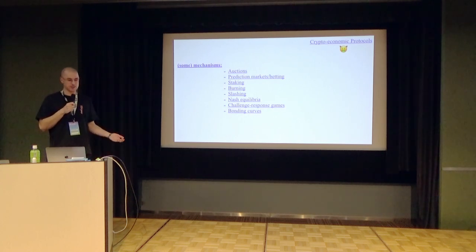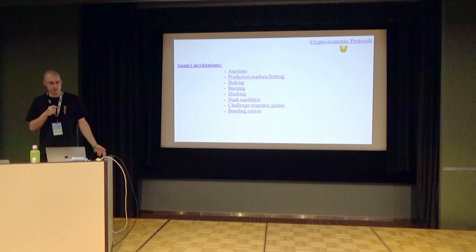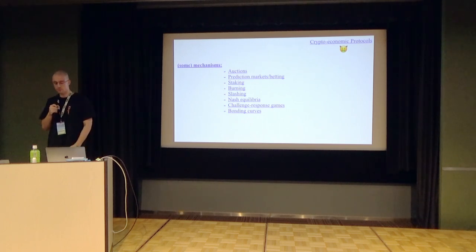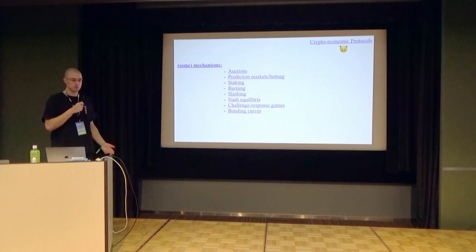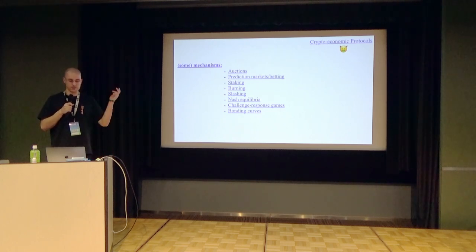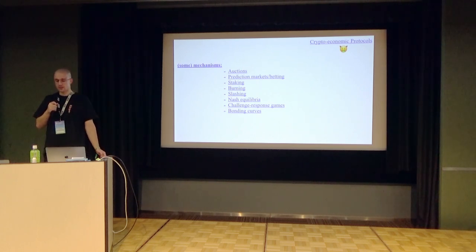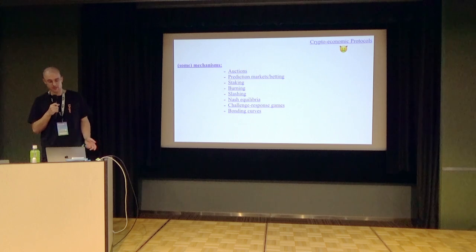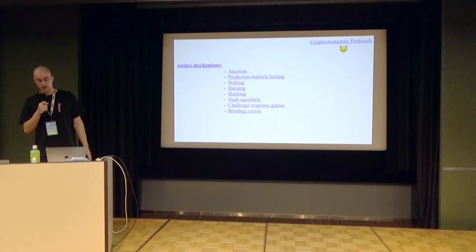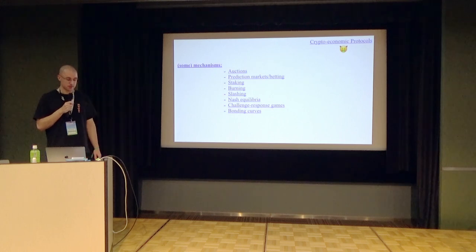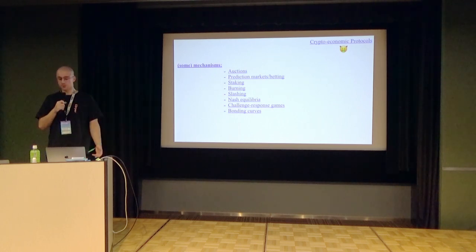With cryptoeconomic protocols, the interesting thing is that all of a sudden it becomes possible to economically punish participants in your protocol if they don't adhere to the rules. For example, in a proof-of-stake leader election, if somebody misbehaves or double-signs, you can slash their stake. It also gives you access to a big array of mechanism design tools — auctions, markets — you can incentivize people to behave rationally and lead to a desired outcome. It makes behaving outside the protocol much, much more expensive, which is also nice for security.